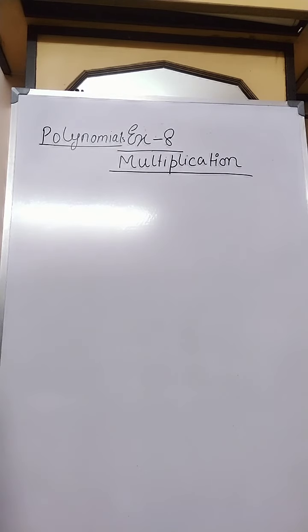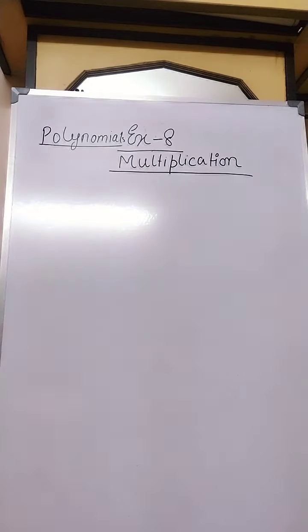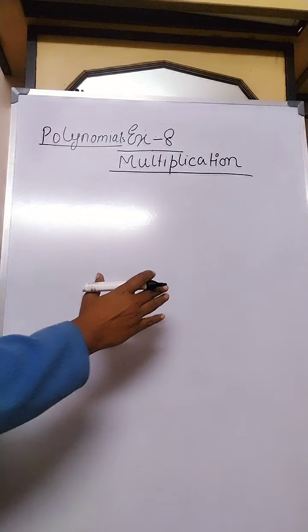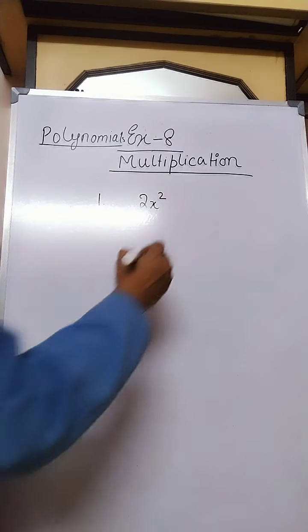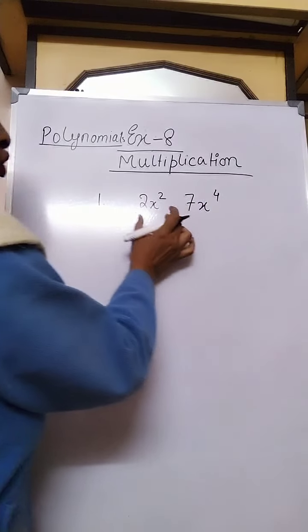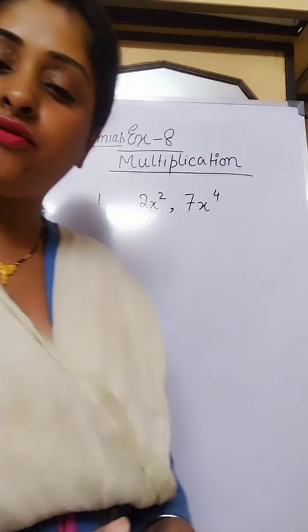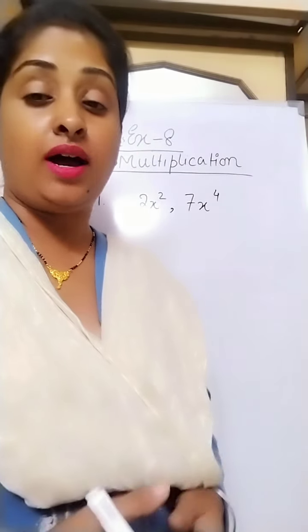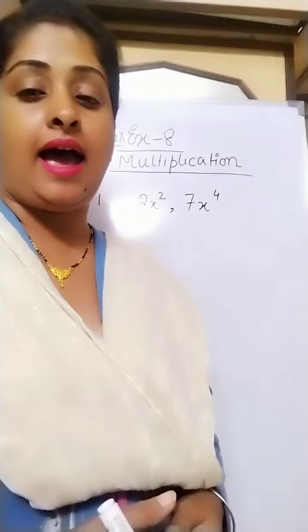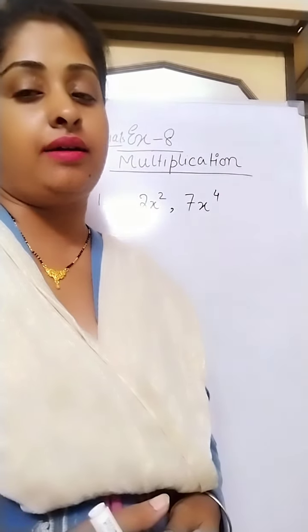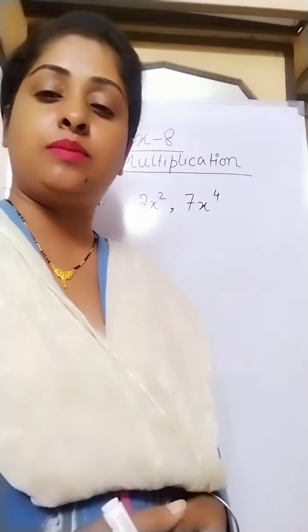From this chapter I will do a few sums which will help you understand how to solve the sums of Exercise 8. So let's start. First is multiply. You have to multiply two expressions — for example, sum number 1: 2x squared and 7x to the power 4. In multiplication, the numericals get multiplied and the powers of the variables get added. The coefficient gets multiplied and the exponent of the variables gets added.